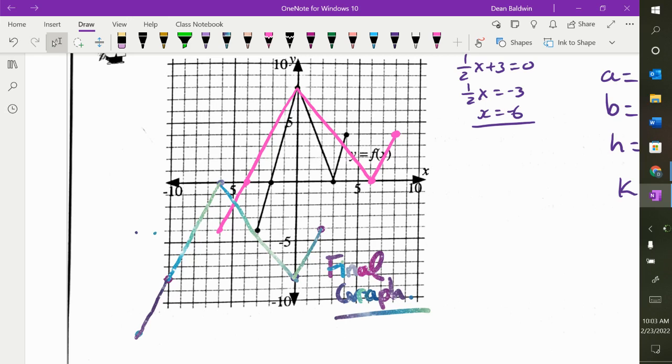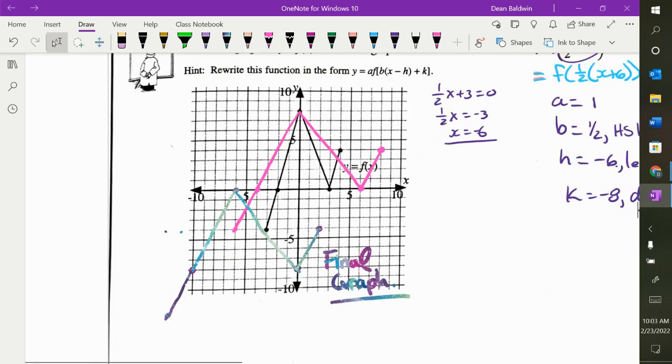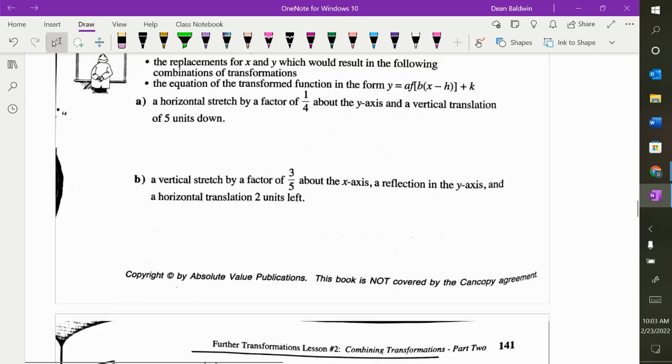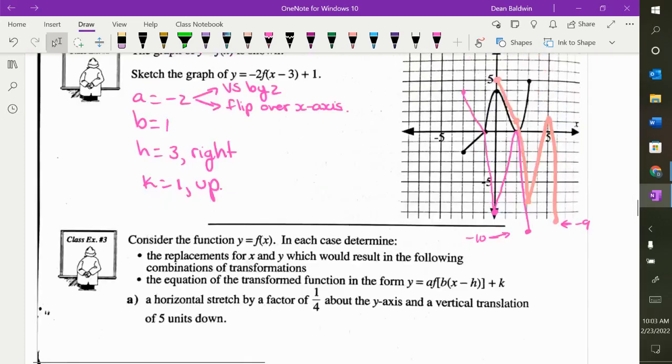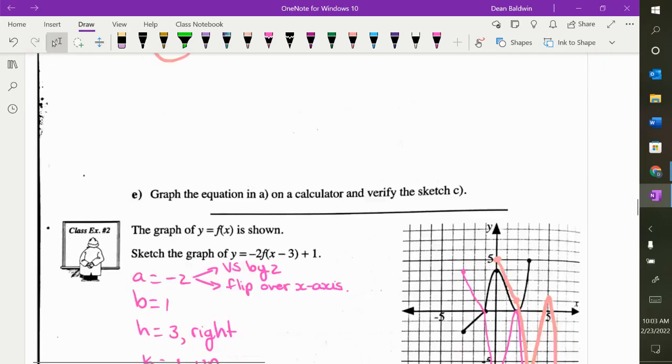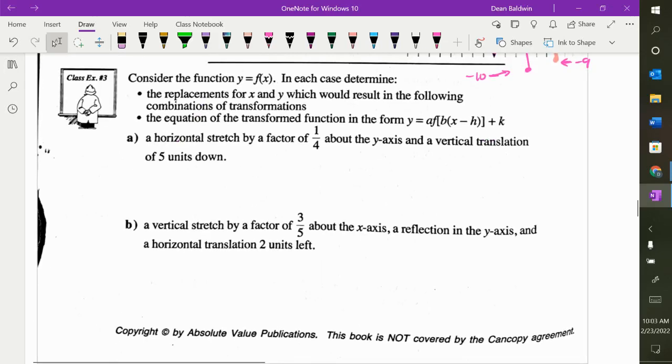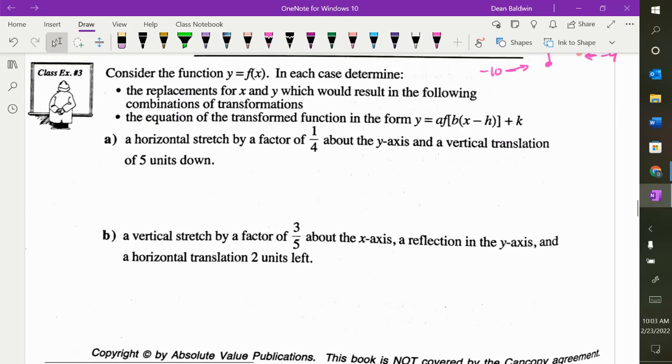One last thing for today and then a few questions. We've done the graphs, now let's do the words. Go back one page to page 140 please. We have to figure out the equation A, B, H, and K. Now we have all the words, all the letters. We've done it with just A's and B's, and we've done it with just H and K's. Now we'll put it all together.